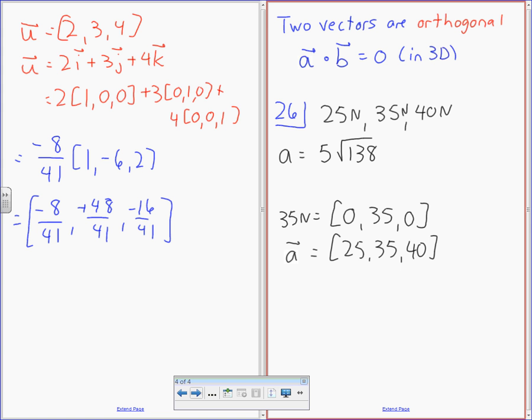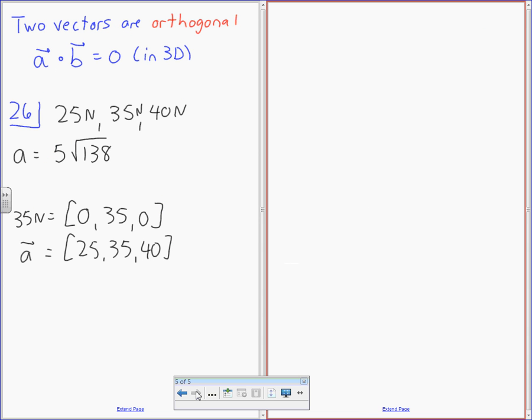How do we deal with u dot v? u dot v is equal to magnitude u, magnitude v cos theta. So cos theta equals u dot v over magnitude u, magnitude v.